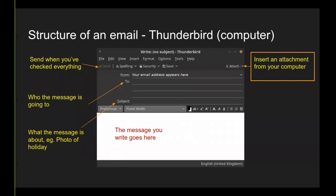Now I'm going to be looking at email structure using three different instances. This is from my Thunderbird app, which is an email client, and I've started to write an email. It always starts with who it's going to, and then what it's about. So if you're writing a message about holiday photos, you can see that in there. You've also got an attachment button over here. On a computer it means going to find the files on your device first — you have to go and look for the files after starting the email; it doesn't work the other way around.